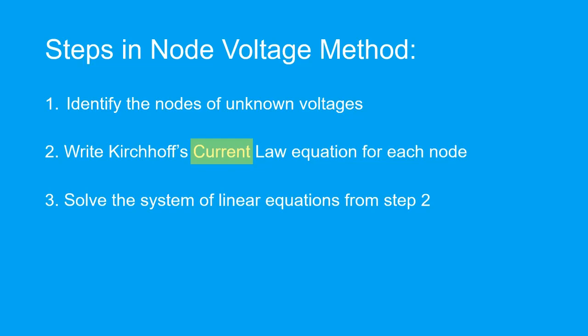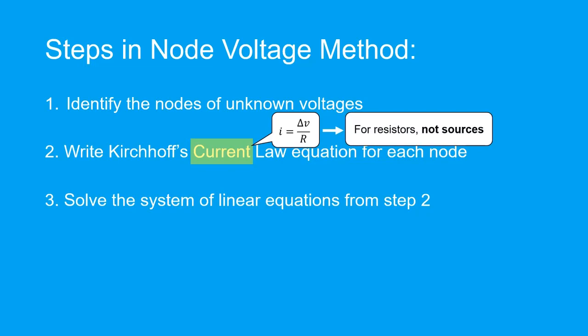Notice I said Kirchhoff's current law, even though we are solving for the node voltages. You may ask: if we use KCL, how will we solve for node voltages? The important action in step 2 is to express currents in terms of node voltages using I equals delta V over R — that's how node voltages come into the picture. Keep in mind that Ohm's law applies to resistive components only, and not sources.